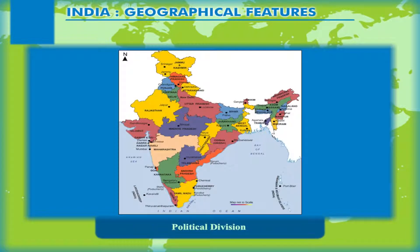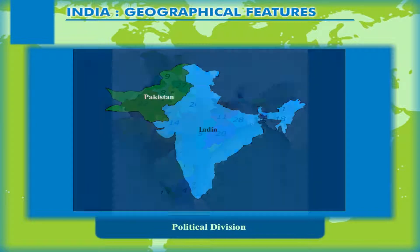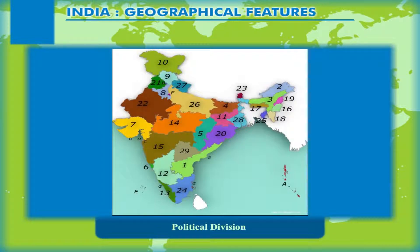Before India became independent from British rule, it was divided into 562 small princely states and 9 British provinces. After independence, it was divided into two parts, namely India and Pakistan. Since then, India has been divided into different states mainly on the basis of language and ethnicity. At present, there are 29 states and 7 union territories, including the National Capital Territory of Delhi.